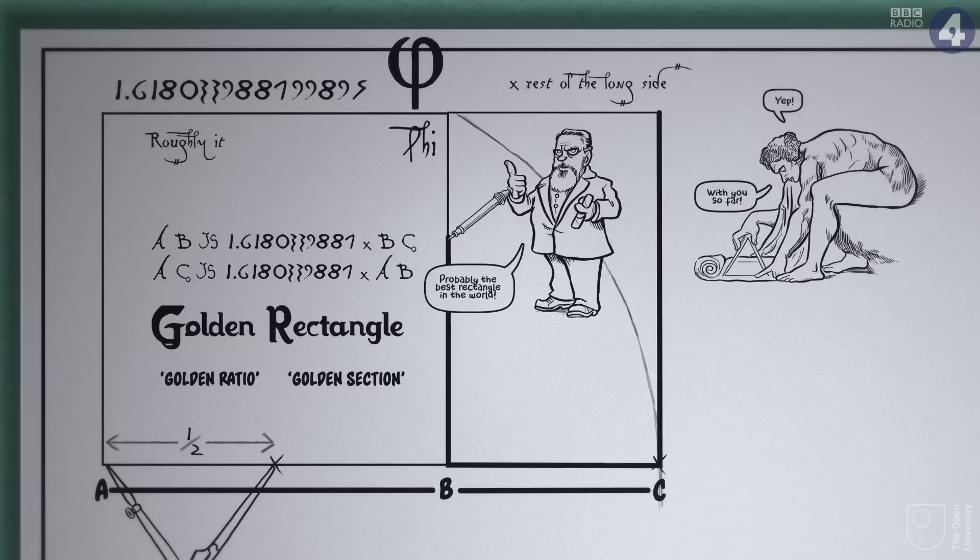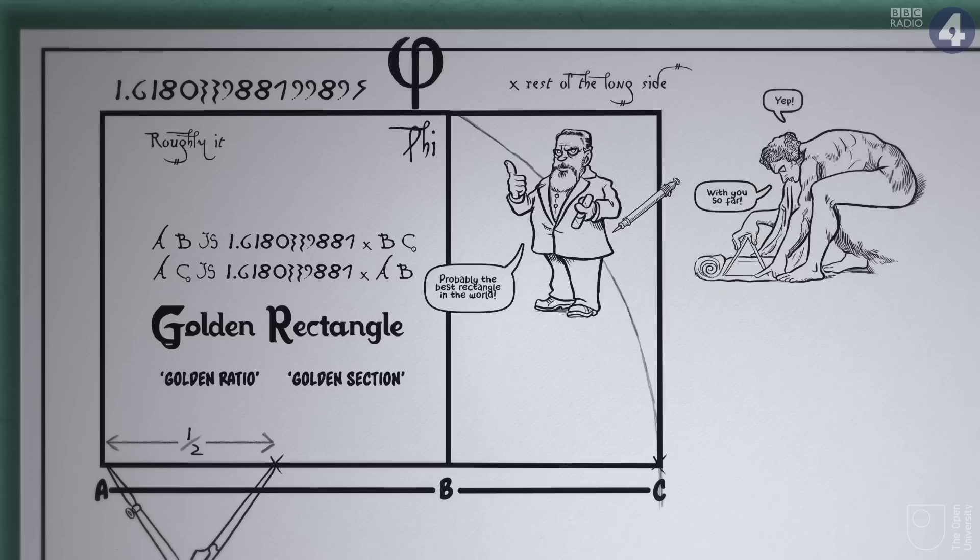Also, the mini rectangle that you formed within the main rectangle when you drew the perpendicular has exactly the same proportions as the big golden rectangle that you first constructed.